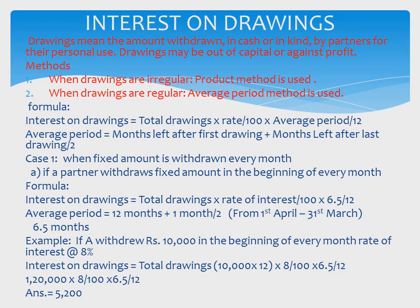Example: If A withdraws ₹10,000 at the beginning of every month at 8% rate of interest. First, calculate total drawings: 10,000 × 12 = ₹1,20,000. Then: Interest = 1,20,000 × 8/100 × 6.5/12 = ₹5,200. The answer is ₹5,200.